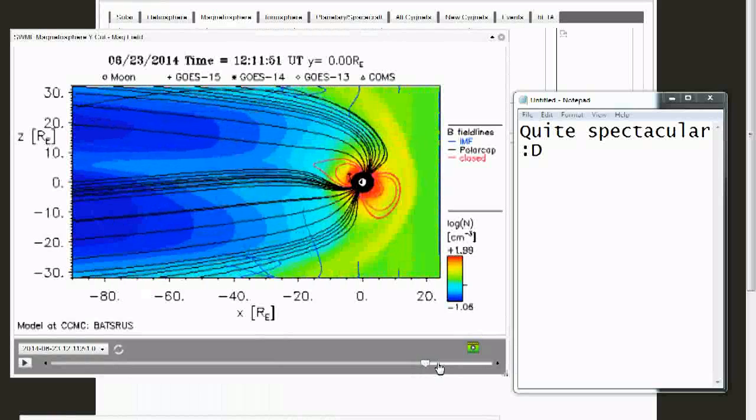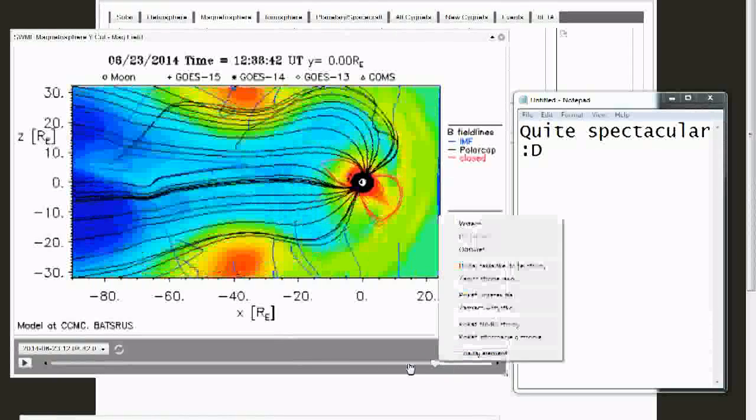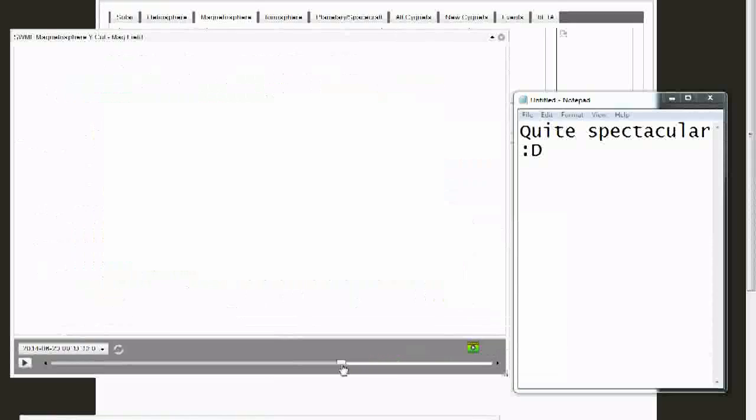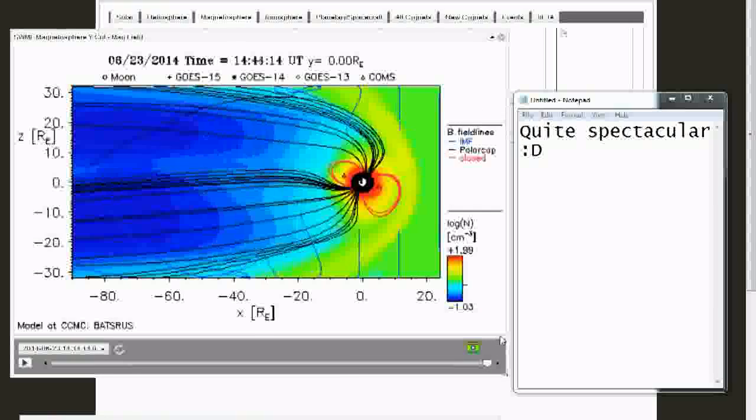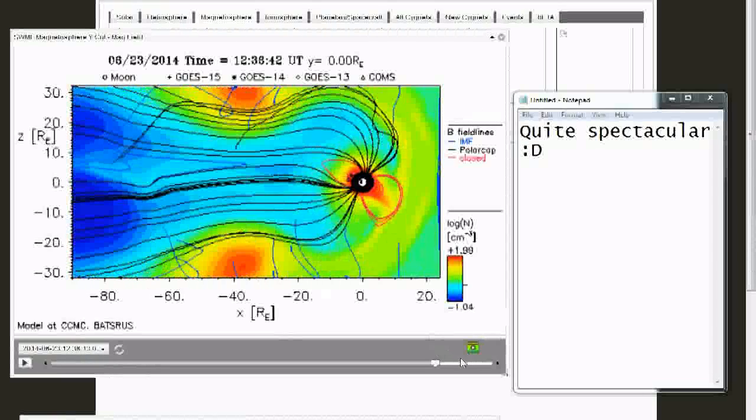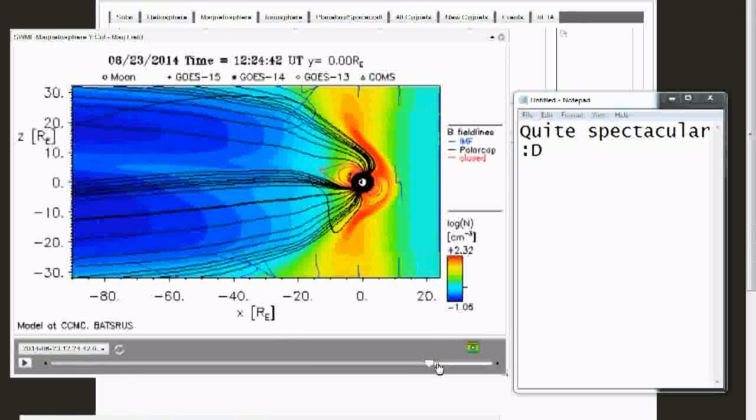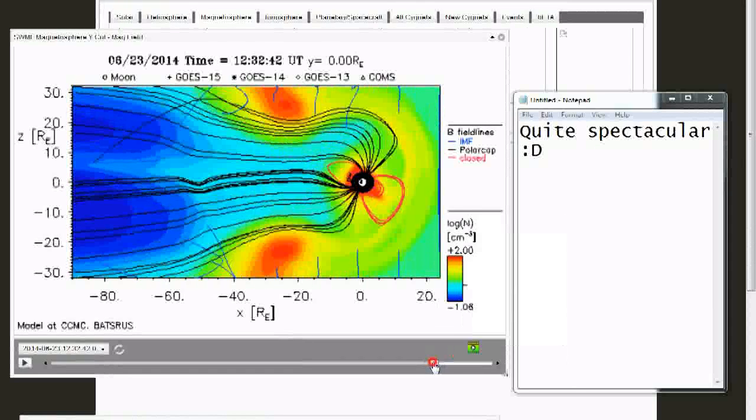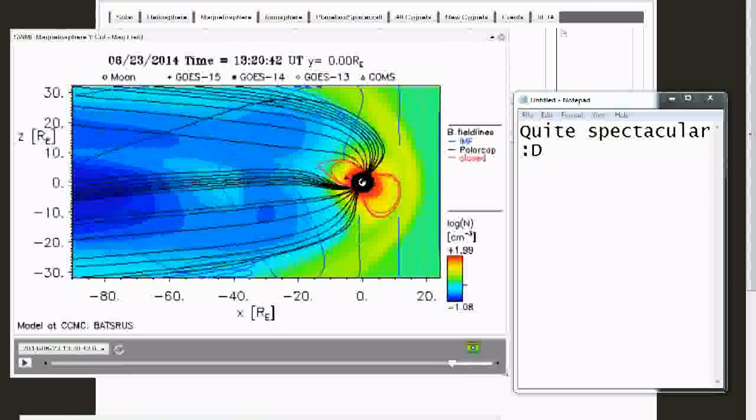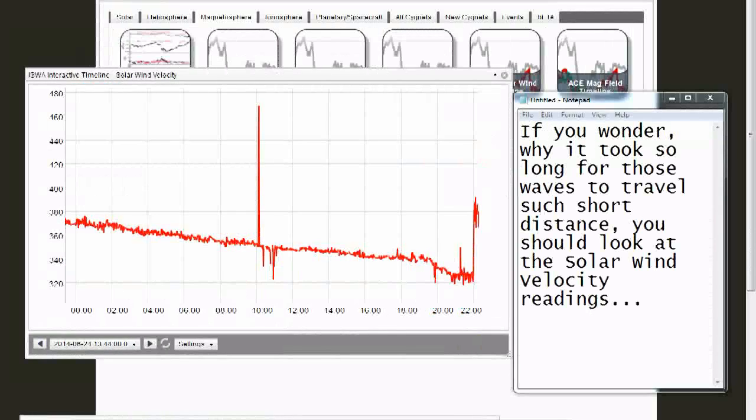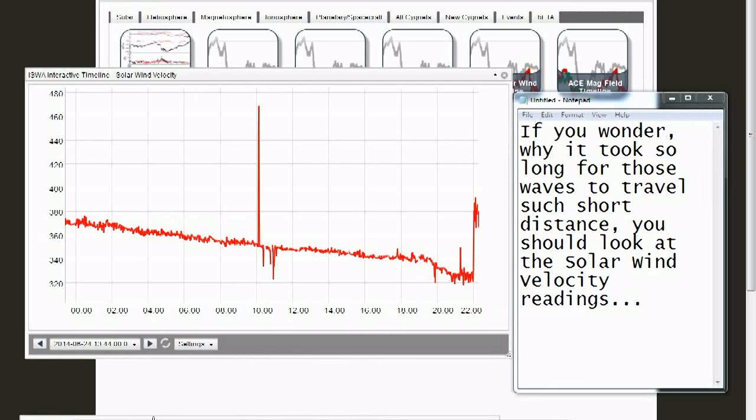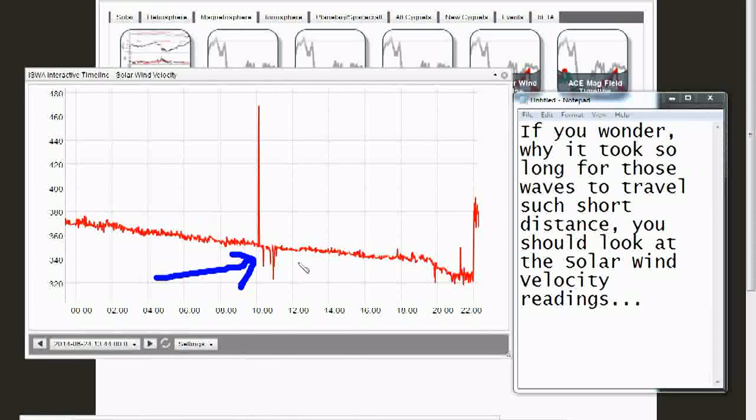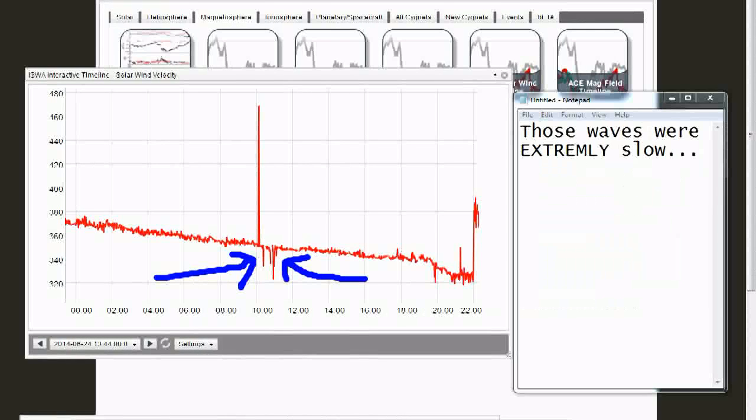Quite spectacular. If you wonder why it took so long for those waves to travel such short distance, you should look at the solar wind velocity readings. Those waves were extremely slow.